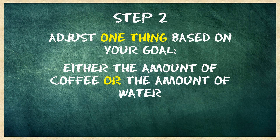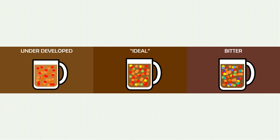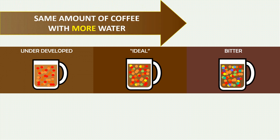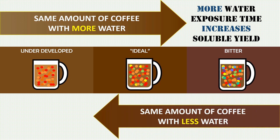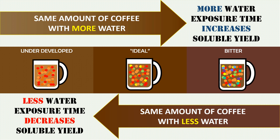For step two, we're going to adjust one thing based on your goal: either the amount of coffee or the amount of water you're using. If you have an underdeveloped cup of coffee and want to move it closer to ideal, use the same amount of coffee but with more water. More water exposure time is going to increase the solubles yield and give you the fuller flavor profile you're looking for. Conversely, if your current coffee is bitter, use the same amount of coffee with less water. Less water time will decrease the solubles yield and keep you from extracting the bitter molecules you'd rather not taste.